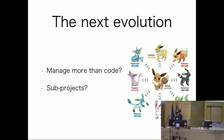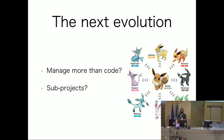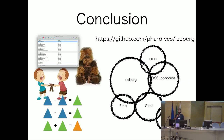What are the possible evolution paths? Two directions we are thinking about: first, managing more than code — for example, from Pharo, committing an HTML file and detecting that you changed it on disk, then asking if you want to commit it via Iceberg. Second, managing subprojects — having more than one project in the same repository. Pharo is a case where we are overusing a flat structure, and we would like to split it up. We don't know exactly what we will do next, but if you have other ideas, we are listening. That is the story of this year of Iceberg. Thank you.